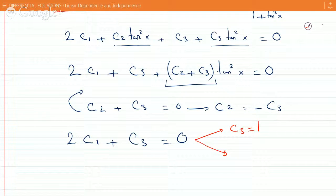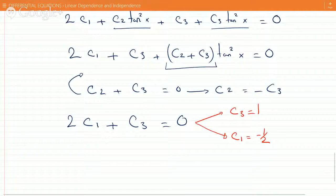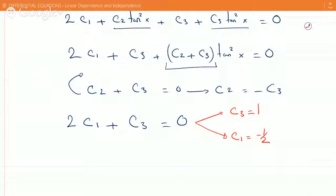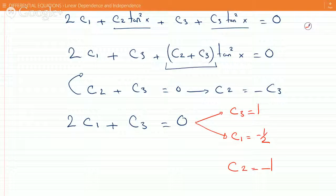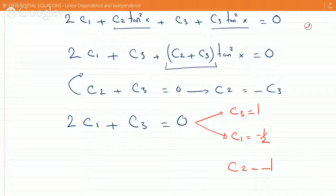And solve for C1, so C1 would be minus 1 over 2 because if you move C3 to the right it's minus 1 over 2, and since C2 equals minus C3 that just means that C2 equals minus 1.